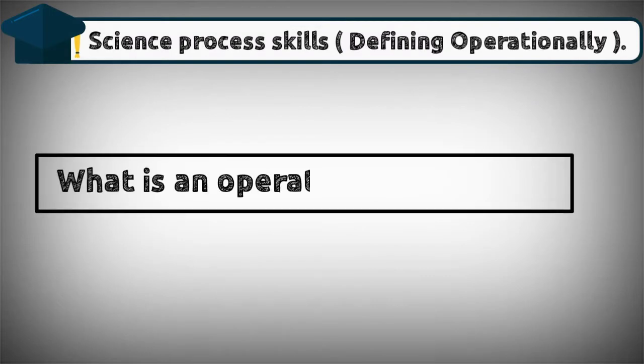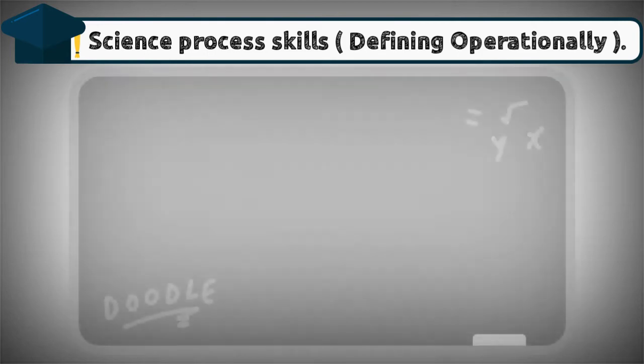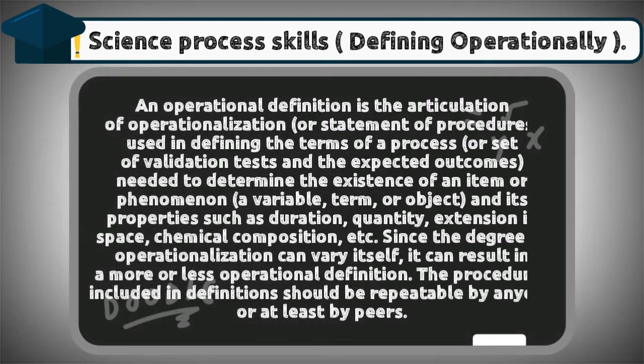Science process skills: defining operationally. What is an operational definition? An operational definition is the articulation of operationalization, or a statement of procedures used in defining the terms of a process or set of validation tests and the expected outcomes needed to determine the existence of an item or phenomenon, a variable, term, or object and its properties such as duration.